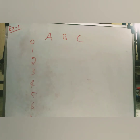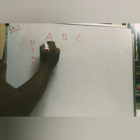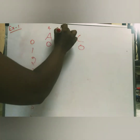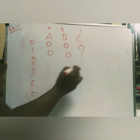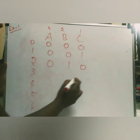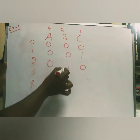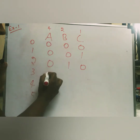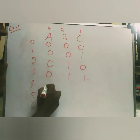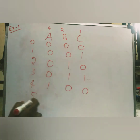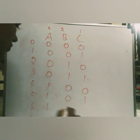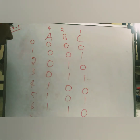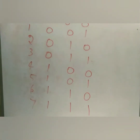Now write the equivalent binary values. For 0: 000. For 1: 001 (one in the units position). For 2: 010 (one in the twos position). For 3: 011 (two plus one). For 4: 100. For 5: 101 (four plus one). For 6: 110 (four plus two). For 7: 111 (one plus one plus one). This is the complete truth table for a three-variable function.